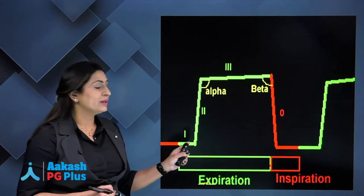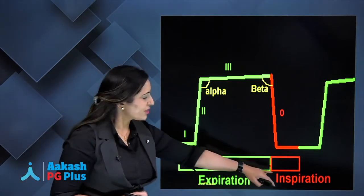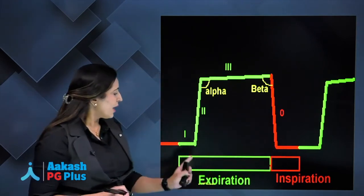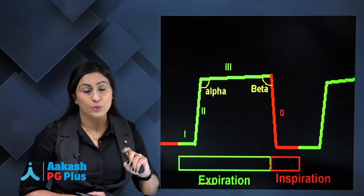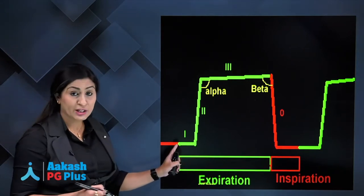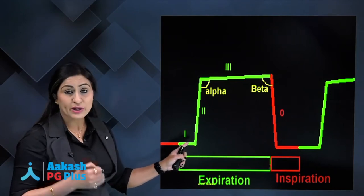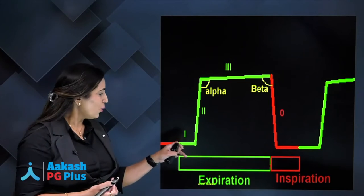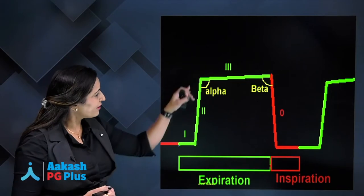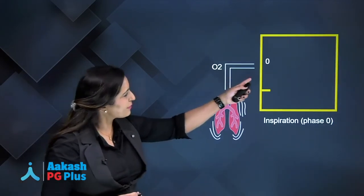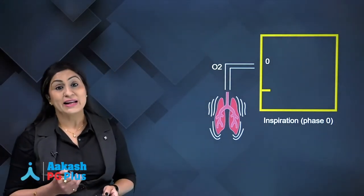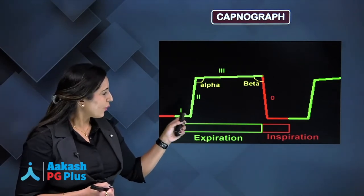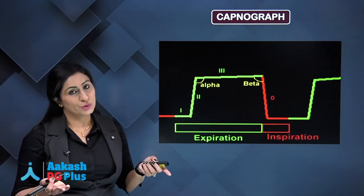This is a normal capnogram, showing expiration and inspiration. During inspiration, CO2 is almost zero, and some part of expiration also has zero CO2. This is because initially when you expire, you are expiring from the dead space — the area where gaseous exchange does not occur — so CO2 will be zero.